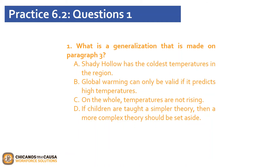The first question of Practice 6.2 is: what is a generalization that is made in paragraph 3? We have four options: A, Shady Hollow has the coldest temperatures in the region; B, global warming can only be valid if it predicts high temperatures; C, on the whole, temperatures are not rising; or D, if children are taught a simpler theory, then a more complex theory should be set aside. The writer states that rising temperatures are quite simply not what is happening, based on the cold temperatures of the day before. Thus, the correct answer is C — on the whole, temperatures are not rising. Feel free to pause the video to complete and review questions 2 and 3. Click play when you are ready to continue.